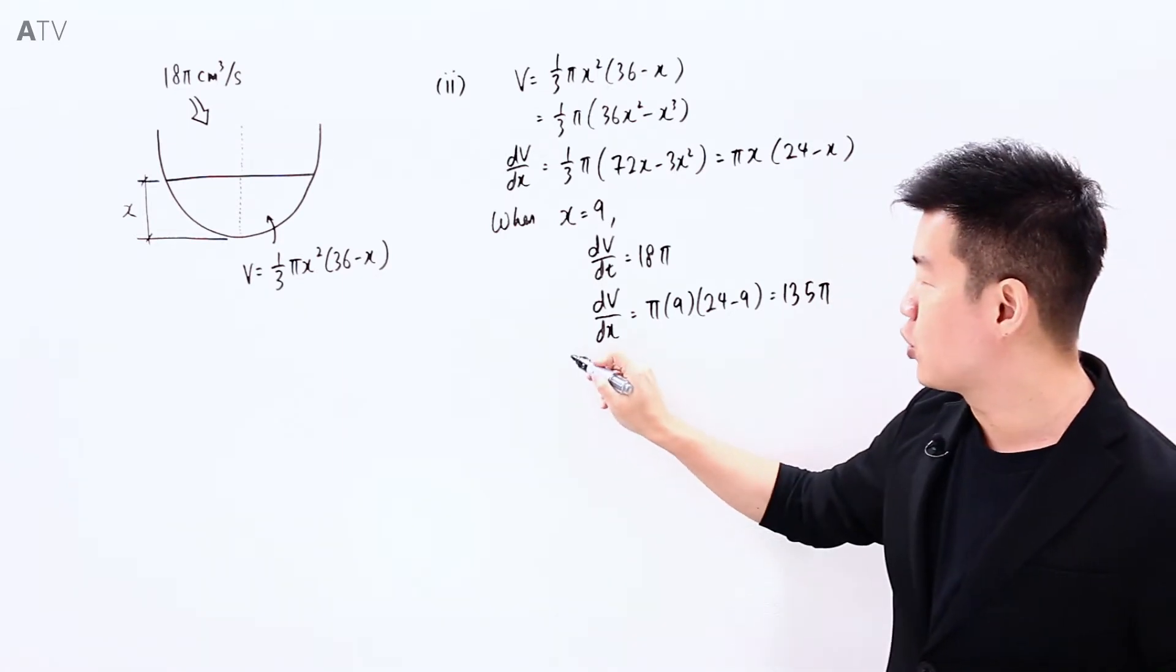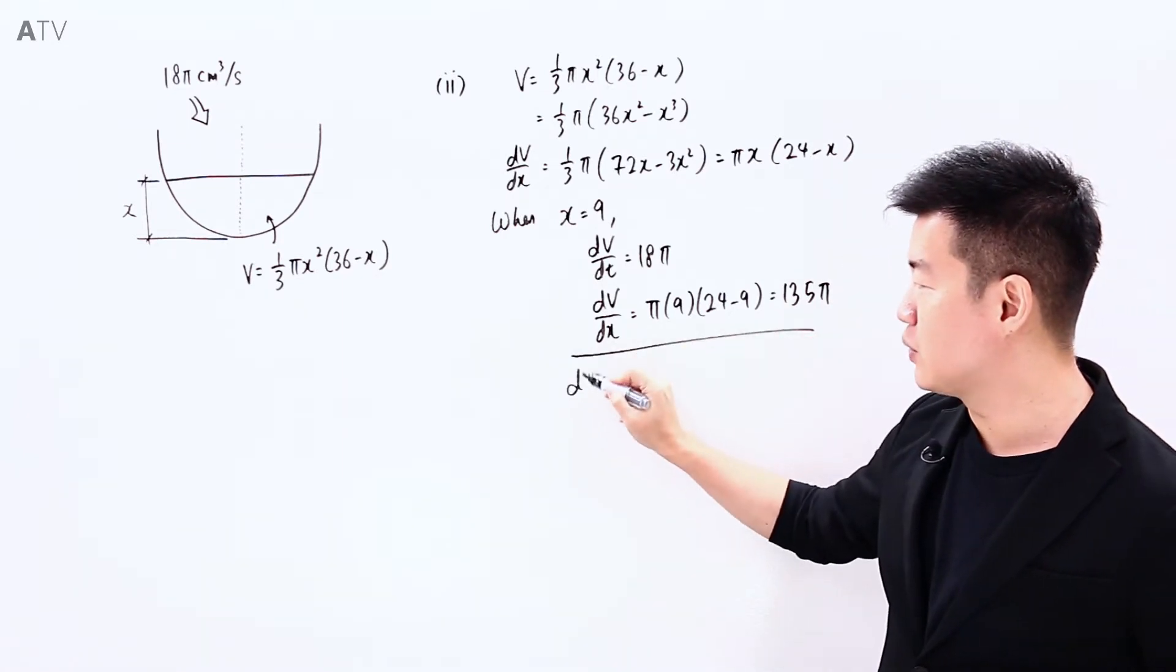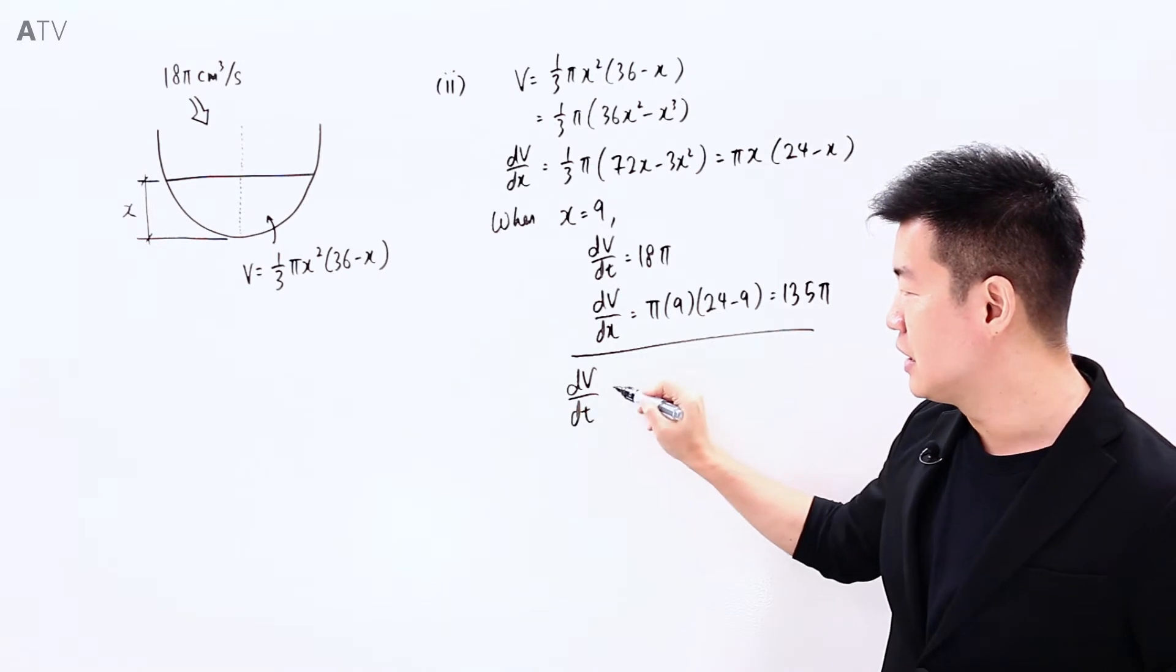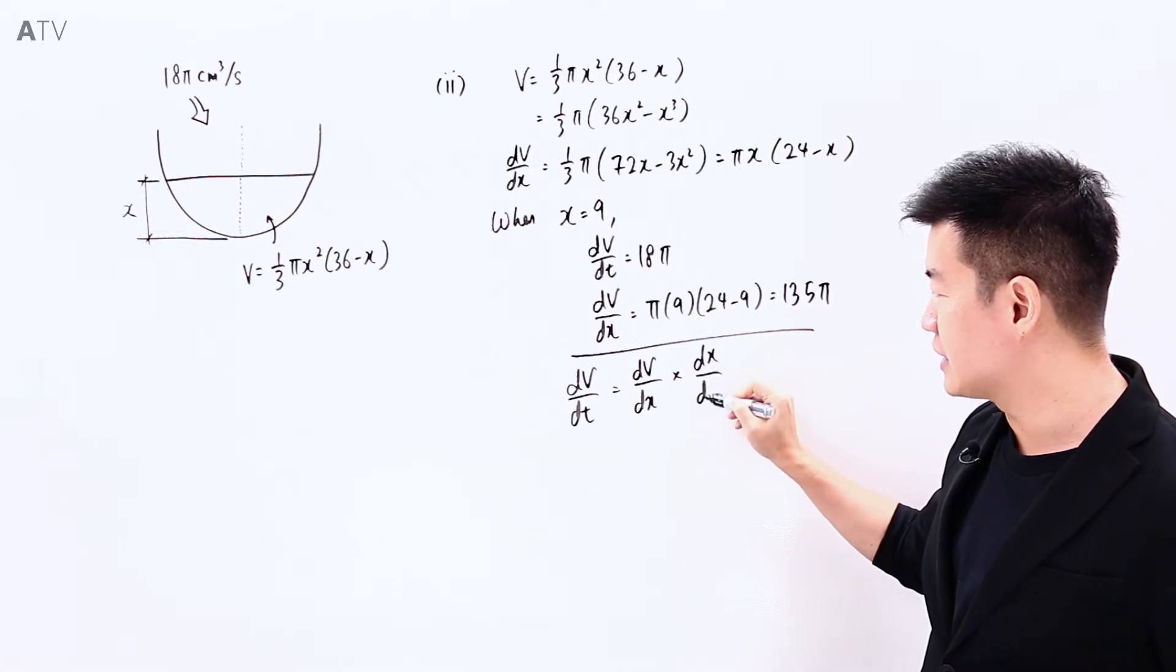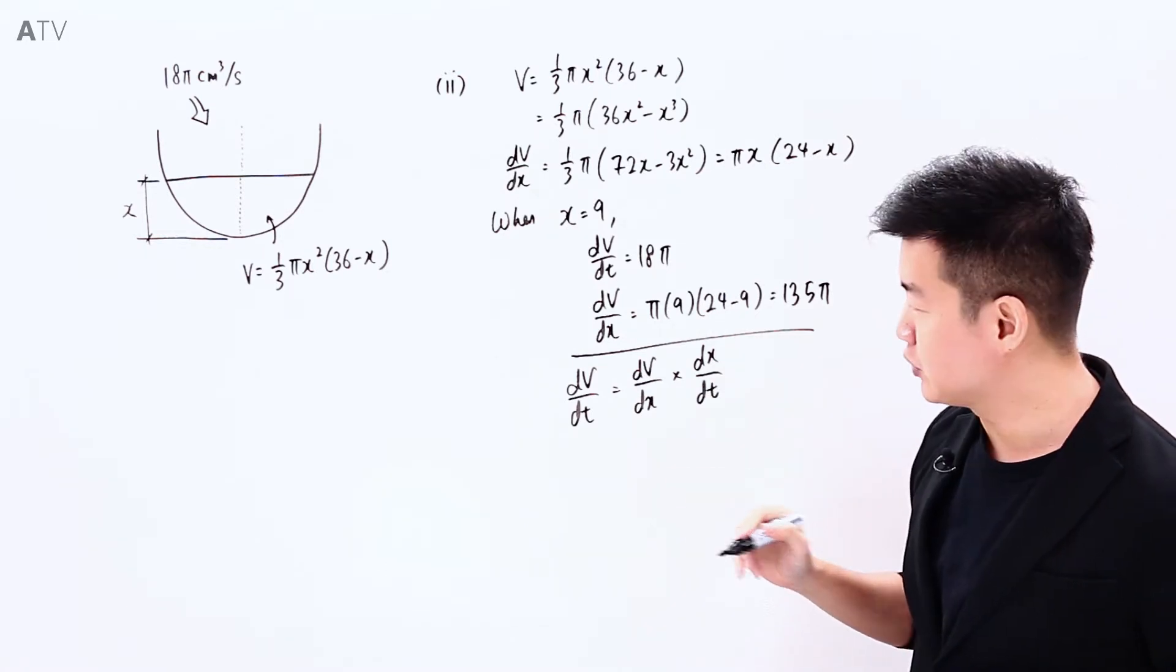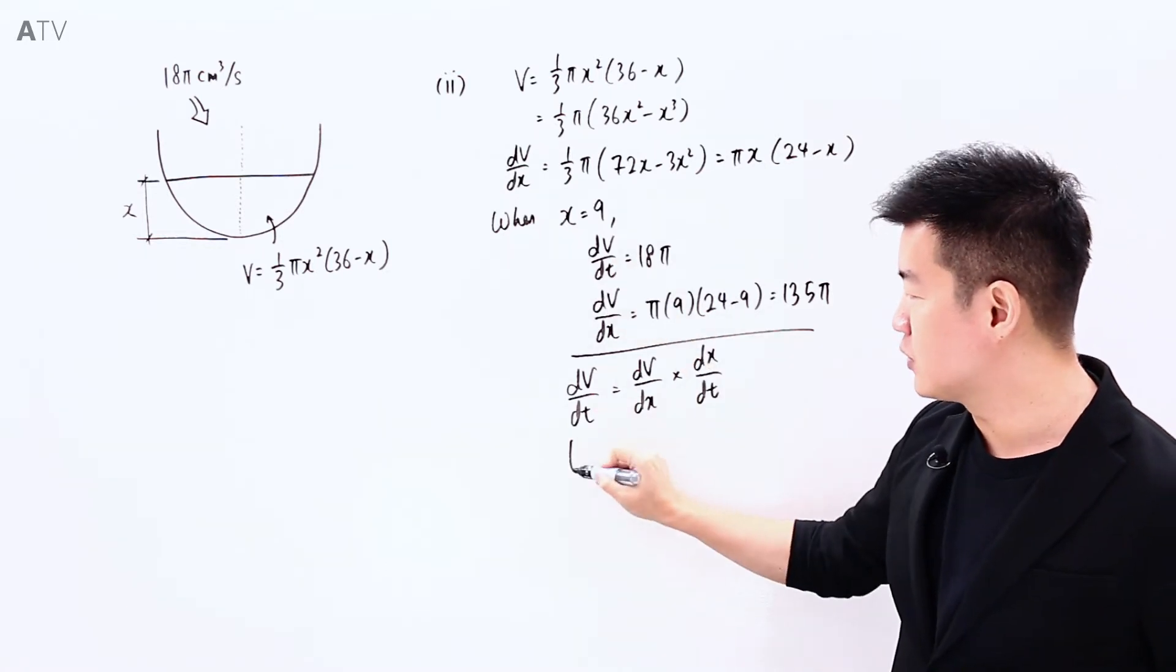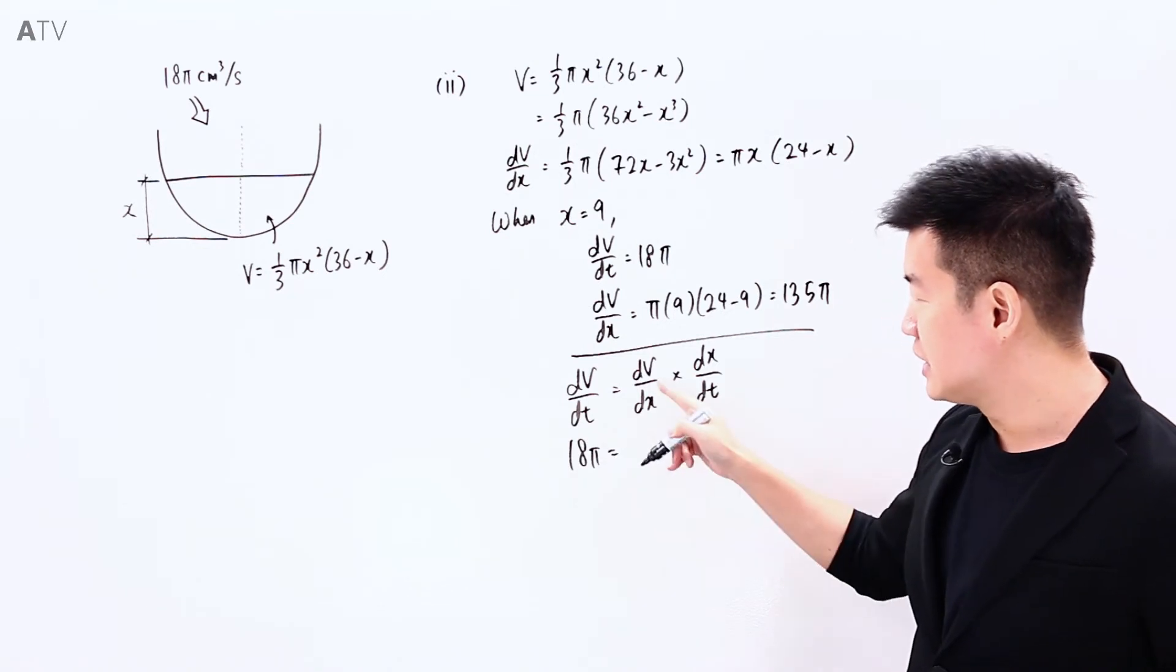So quoting the rate of change equation, we have dV/dt is equal to dV/dx multiplied by dx/dt. dx/dt is what we are supposed to find. dV/dt is equal to 18π, dV/dx...